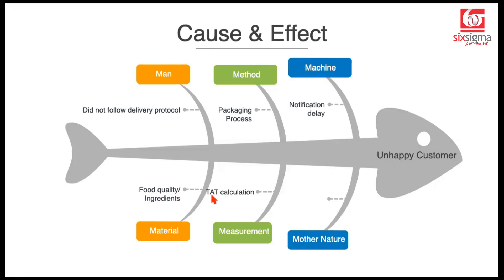Under measurement, we are talking about the turnaround time calculation. Whenever you're ordering food online, you often see an estimated time of delivery — let's say it will be delivered in less than 30 minutes. That has a number of factors baked in: how long would the restaurant take to prepare the food, how long would the delivery partner take to reach the restaurant to pick up your order, and from the restaurant how long would the delivery partner take to reach your place. It has a number of assumptions underneath, and if we go wrong with our calculations, then the estimated time of delivery shown at the time of placing the order might not match the actual time taken, and the customer may not appreciate the delay.